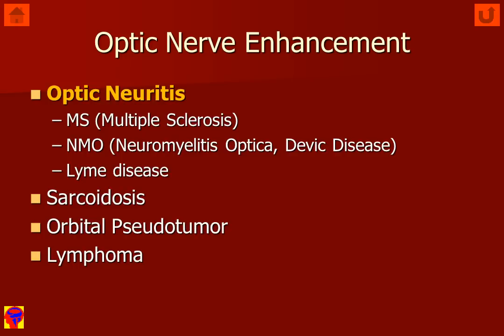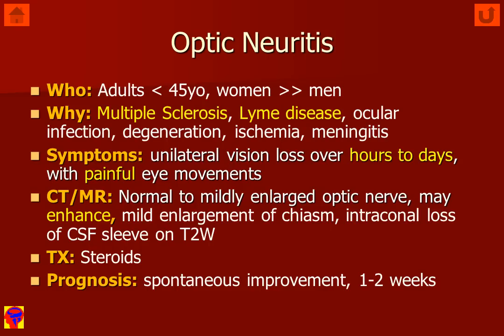Optic neuritis may be caused by multiple sclerosis. It can be seen as part of neuromyelitis optica, or Devic's disease. It may be caused by an infection, such as Lyme disease or Borreliosis. Optic nerve enhancement occurs in sarcoidosis, with orbital pseudotumor, and can be part of lymphoma. Optic neuritis is most common in adult patients, typically in women, because of the predominance of multiple sclerosis. The patient typically has unilateral vision loss that progresses over hours to days and may be accompanied by painful eye movements.